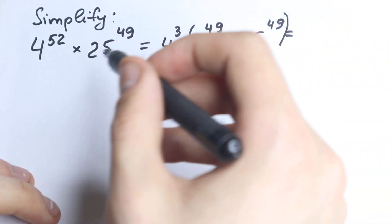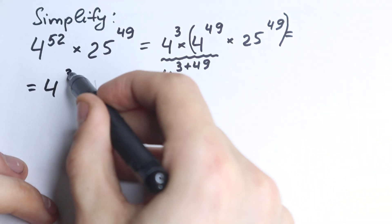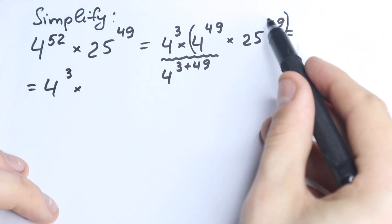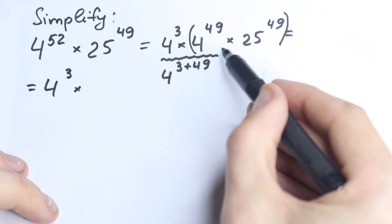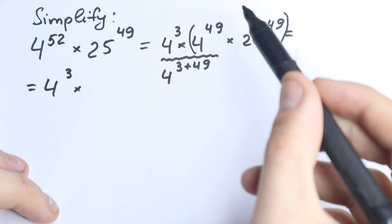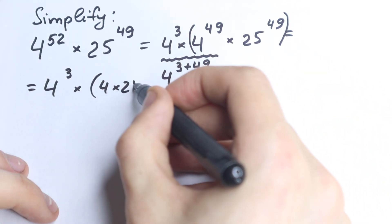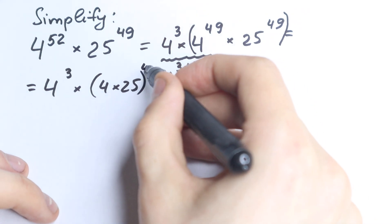Take a look closely at this rule. So we have 4 cubed times... right here, if we have the same powers, you don't need to add them. You just need to multiply the bases and raise to the power 49, which is really important. So we have 4 times 25 to the power 49. Okay?